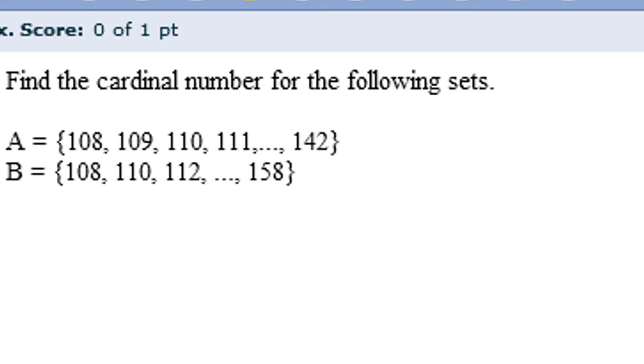An important distinction between these two sets is the pattern that they follow. Set A actually increases by one each time, whereas set B increases by two. Anytime the increase or the pattern is more than one, it's a little bit more complicated to determine the cardinal number, but I'm going to show you a method that you can use. First, let's start though with set A.